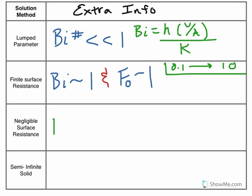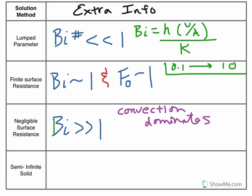Negligible surface resistance, your Biot number needs to be significantly greater than one. Remember, what this is saying is that since our Biot number is greater than one, convection is dominating in our system. So, the temperature at the surface is going to immediately go to the temperature of the surroundings at T equals zero.